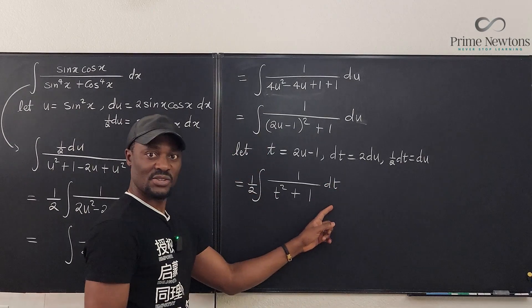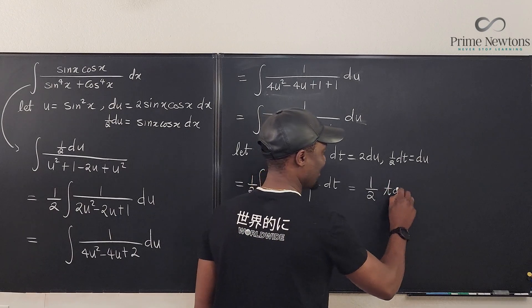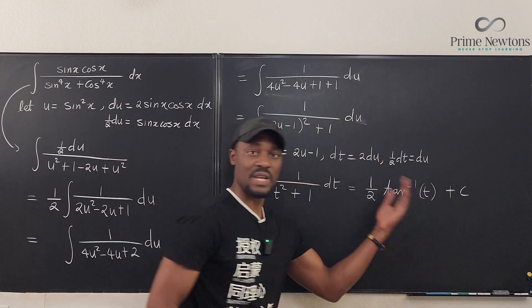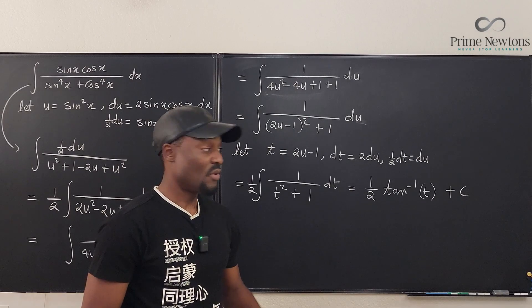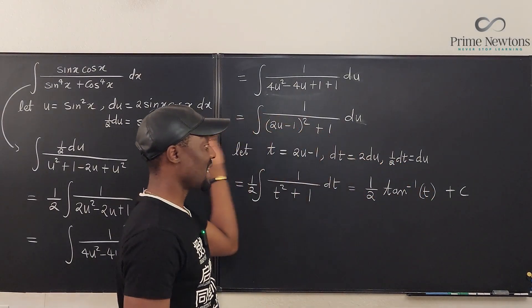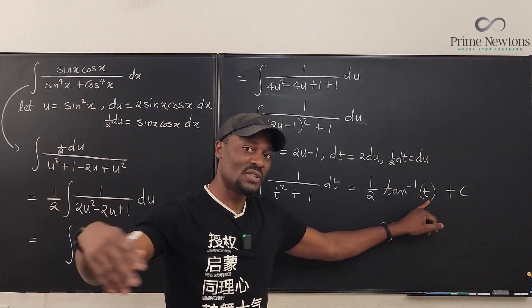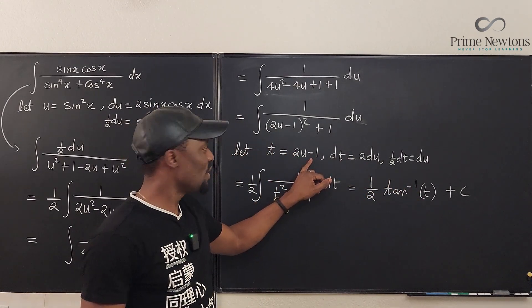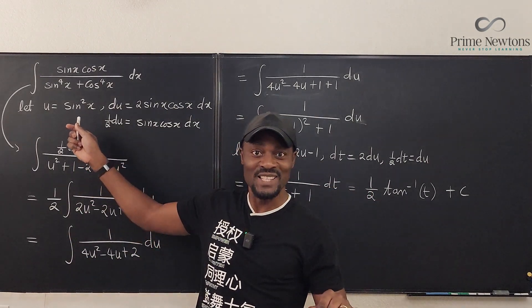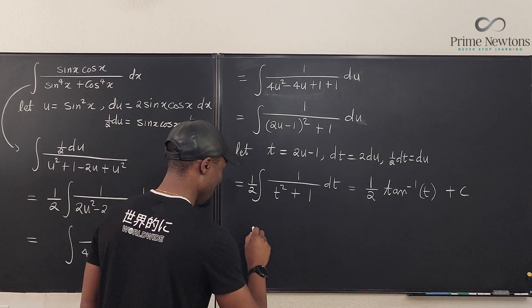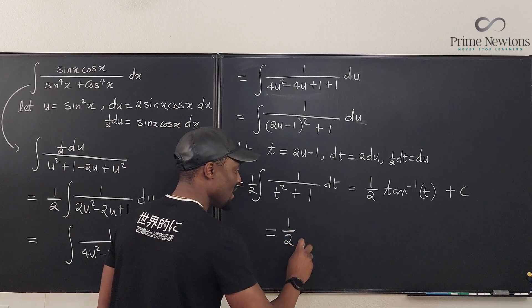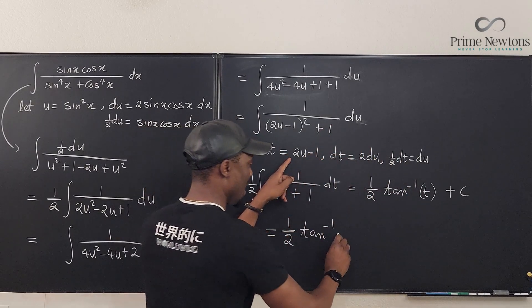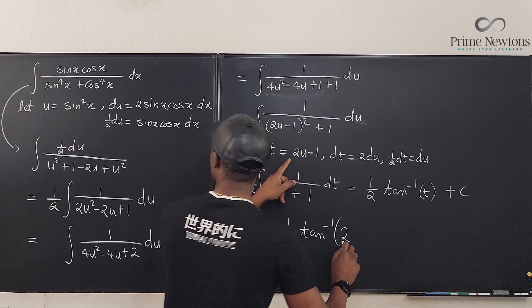Well, what is this integral? It is equal to one-half arctan(t) + c. This is your integral. Well, we know we didn't start with t, we didn't start with u, we started with x. We just need to trace our path back to the beginning. What did we say t was? We said t was 2u - 1. And what did we say u was again? u was sine squared x. So your answer, actually, this integral will be equal to 1/2 times the inverse tangent of t, but we said t is 2u - 1, which is going to be 2 times u, what is u? u is sine squared x, 2u - 1, plus c.